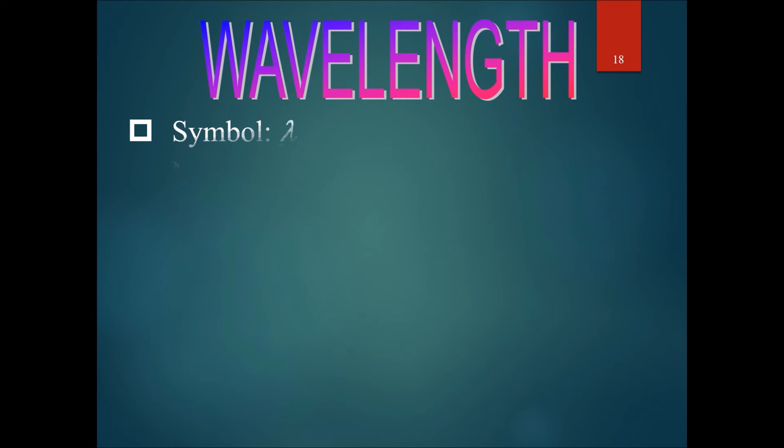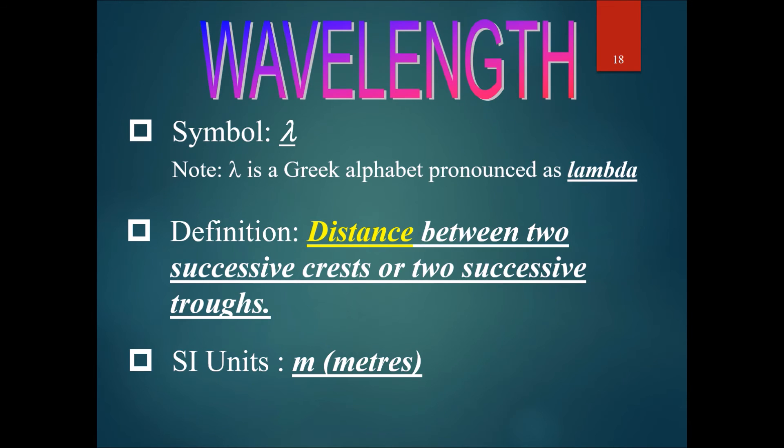Now, let's talk about wavelength. Wavelength is the distance between two successive crests, or two successive troughs. The symbol for this is lambda. Basically, you try to draw kind of like a straight inverted S shape, and then draw a tail coming out of the middle. If you are trained in the Chinese language, this looks a little bit like a symbol for red. The SI unit of wavelength is also meters.